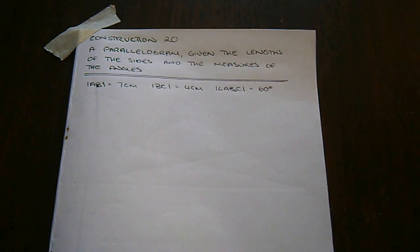Construction number 20. Construct a parallelogram given the lengths of the sides and the measures of the angles. Say we want to construct a parallelogram where the length of one side is 7, the length of the other side is 4, and the angle, let's call it ABC, is 60 degrees.